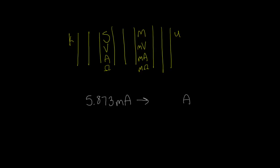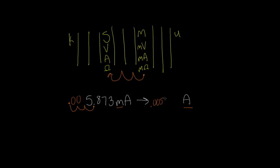What you're going to do is say, alright, right now I am in the milli column and I want to go to standard amps. I'm going to go one, two, three times to the left. Decimal place — one, two, three. So 0.005873 amps. That's pretty much how it works. You just go left or right depending on where you're starting and where you're ending.